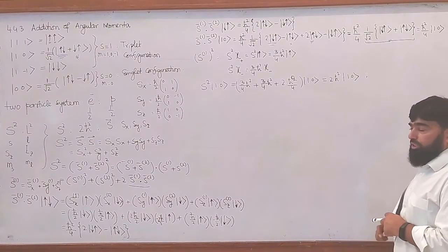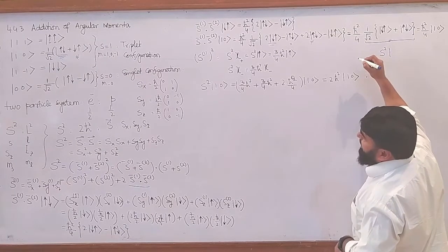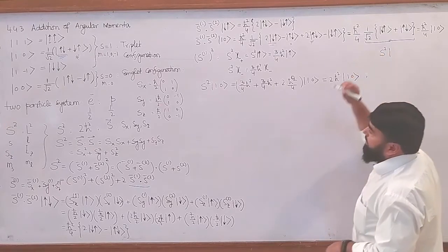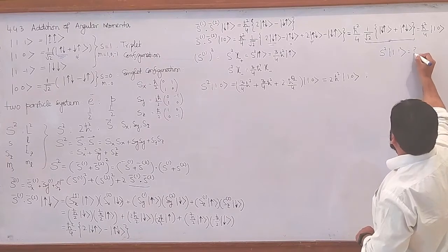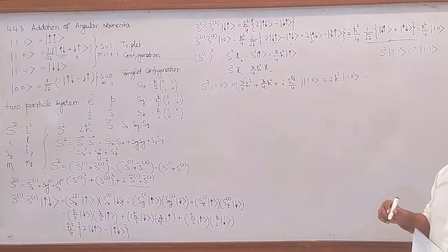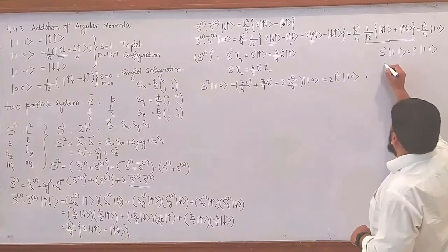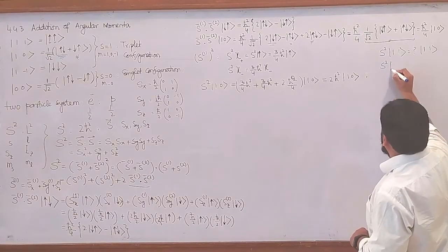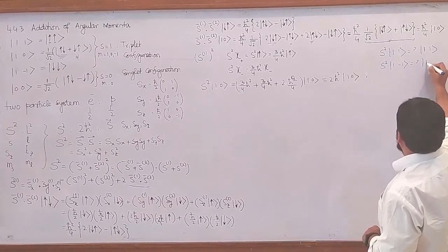For homework, you can calculate S² when it operates on the state |1,1⟩ — instead of |1,0⟩, you take |1,1⟩ — and find what eigenvalue it gives you. It is also an eigenstate, also an eigenfunction of S². Apply S² on |1,1⟩ and check what eigenvalue it gives. You can also apply S² on |1,-1⟩ and check what eigenvalue it gives.